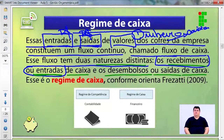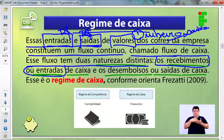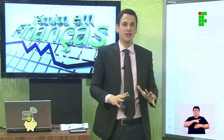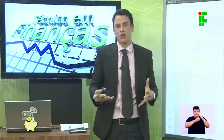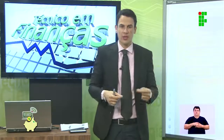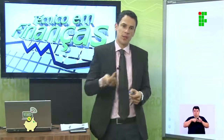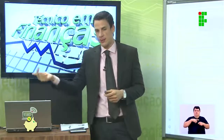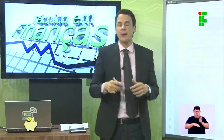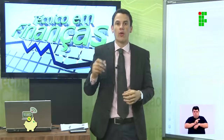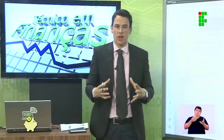Um exemplo de como fazer o controle de caixa é com o livro de caixa — aquele livro de registro onde você faz anotações. Mas também existem inúmeras planilhas que a gente desenvolve para a empresa fazer esse fluxo de caixa. Na maioria das vezes, é o fluxo de caixa associado com as contas a pagar e a receber: quando você lança contas a pagar, debita no fluxo; quando lança contas a receber, credita no fluxo.